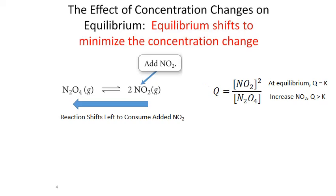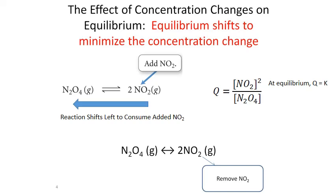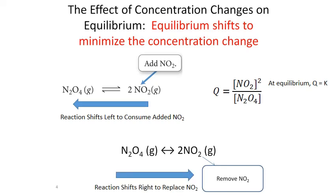We see a similar effect when we remove reactants or products. Looking at the same reaction, if we remove our NO2, then to counterbalance this disturbance, our reaction is going to shift to replace that NO2 that's been removed. So the forward reaction is favored — the reaction shifts right to replace the missing nitrogen dioxide and return the system to equilibrium. In terms of reaction quotients, removing our product NO2 lowers the value of Q below our equilibrium constant K, and when Q is less than K it favors the forward reaction, producing products and consuming reactants.